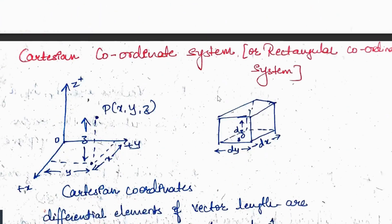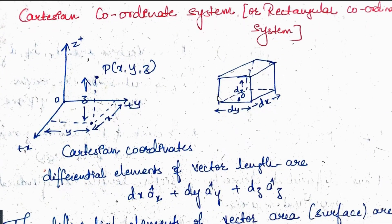Starting with the first concept: the Cartesian coordinate system, also called the rectangular coordinate system. Consider an xyz plane and place a point P here. I'm going to explain the derivations in detail, including all the steps you have to write. The introduction part of a derivation should be written like: 'Consider the xyz plane and place a point P. Let point P have the coordinates x, y, z.'